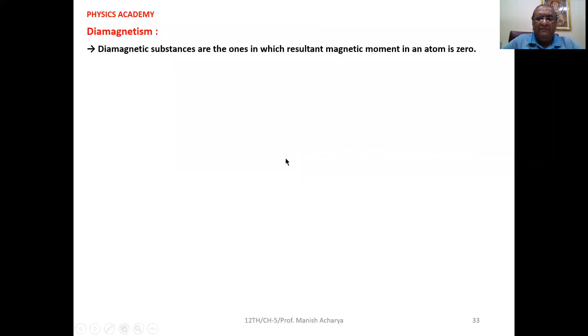Now, diamagnetism first. Diamagnetic substances are the ones in which resultant magnetic moment in atom is zero. Atoms do not possess permanent resultant magnetic moment.